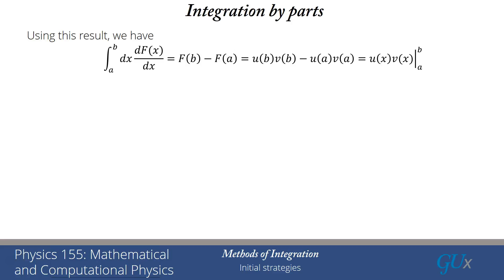Substitute in what F is, that will be u(b)v(b) - u(a)v(a), which we write in the shorthand notation u(x)v(x) with a vertical bar and a subscript of a and a superscript of b. You've seen this notation before. That means that you substitute the b in for x and you subtract the substitution of the a in for x. And that is the way that we evaluate and symbolically note what the result for a definite integral is.